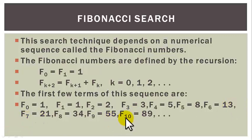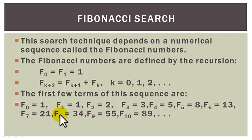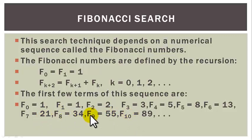F7 is F5 plus F6, that is 8 plus 13 which is equal to 21. F8 is F6 plus F7, that is 13 plus 21 and that is 34. F9 is F7 plus F8 which is 21 plus 34 and that is 55. F10 is F8 plus F9, that is 34 plus 55 which is equal to 89, and so on.